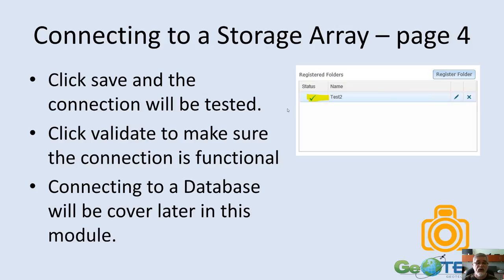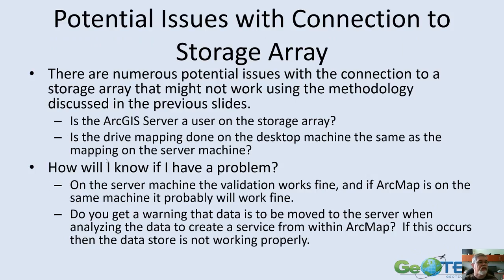That's the way it should work — pretty straightforward. However, there are numerous possible issues. The biggest sign of a problem is: when you go to publish your map, it says it's going to move a bunch of data over to your server. It should be moving no data to your server because you have this pathway set up for data storage. If it's moving data over even after you've completed the handshake and everything looked right, that's where you have a problem.